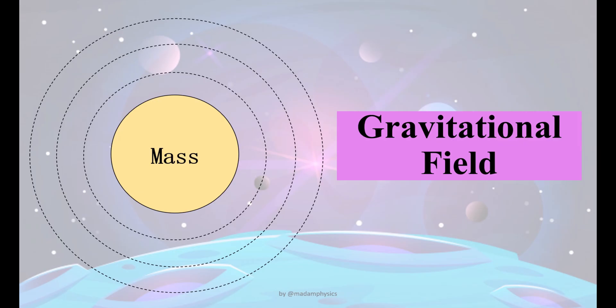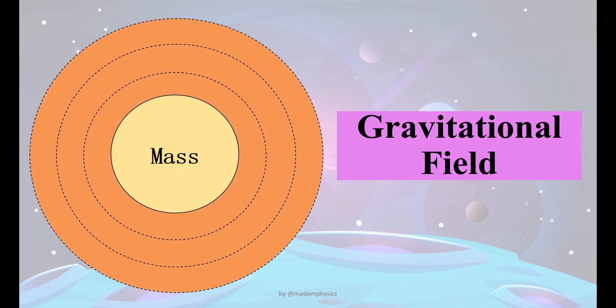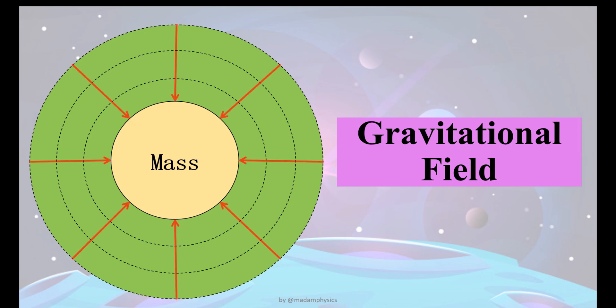Gravitational field is a region around a body that has mass. Usually, we put arrows to represent the direction of gravitational field strength. The direction is always towards the centre of the body.